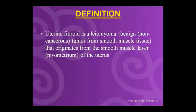The definition: uterine fibroid is a leiomyoma. It is a benign, non-cancerous tumor. It is composed of smooth muscle tissue of the uterus, originating from the myometrium.